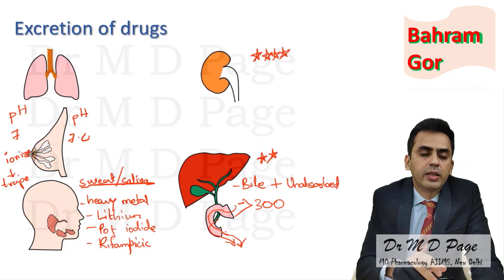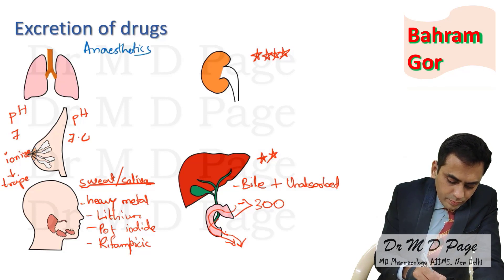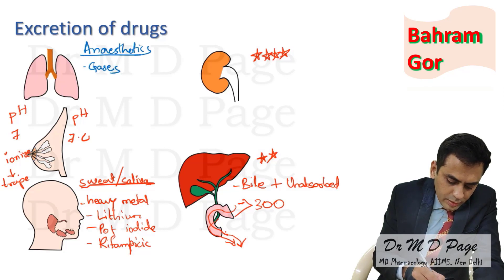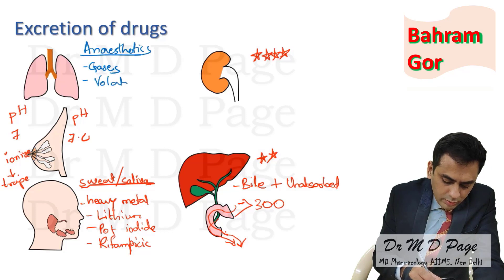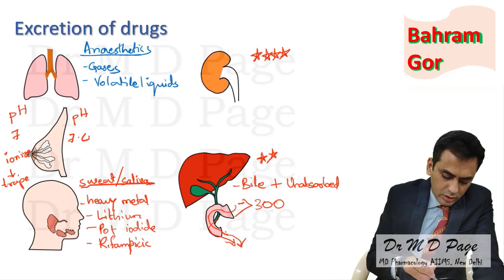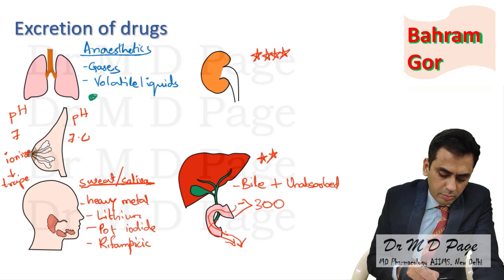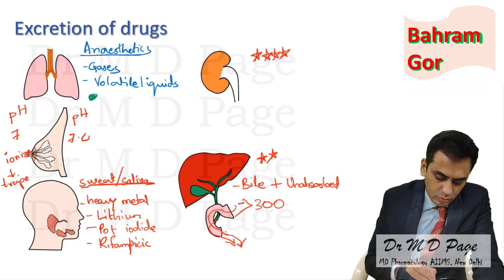For the lungs, not all drugs get excreted via this route — it is only important in the case of anesthetics. Gases as well as volatile liquids are excreted via this route — for example, alcohol and general anesthetics. One more important thing: in the lungs, lipid-soluble drugs can get excreted, whereas in other routes only polar drugs were getting excreted.